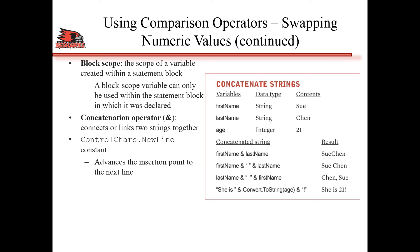We also talked about the concatenation operator, the ampersand - it connects two strings together. Some examples on the right: suppose you have two strings like first name and last name, or three items like first name, last name, and an integer age. If you put firstName & lastName and first name is 'Sue' and last name is 'Chen', they appear side by side. If you add a space in quotes between them, the space appears. The last example: if you want to say 'she is 21!', the 21 comes from an integer age variable, so you have to convert it to a string and then use ampersand to place them all together.